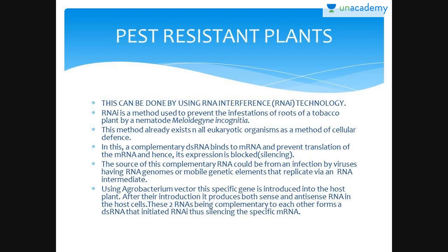Several nematodes parasitize a variety of plants and animals including human beings. A nematode infects the root of tobacco plants and causes a great reduction in yield. The strategy to address this is based on RNA interference, also known as RNAi, which prevents the infestation process by which double-stranded RNA, also known as dsRNA, directs sequence-specific degradation of mRNA.